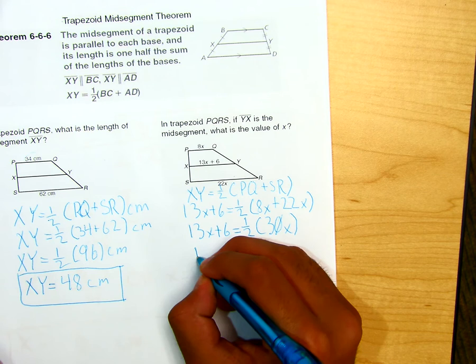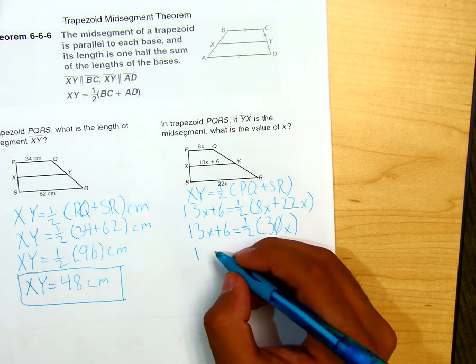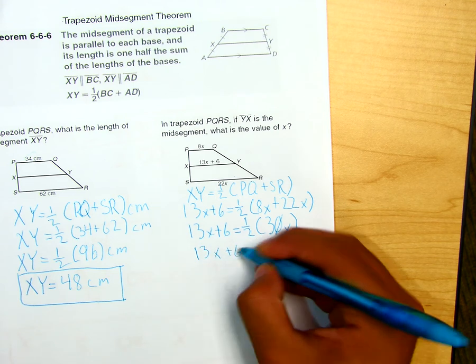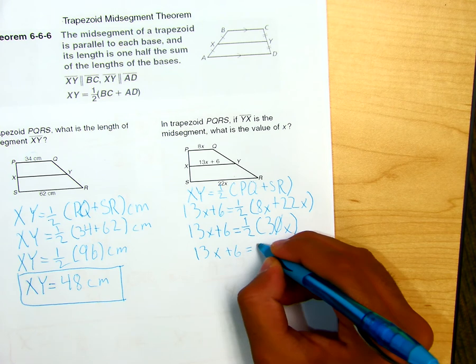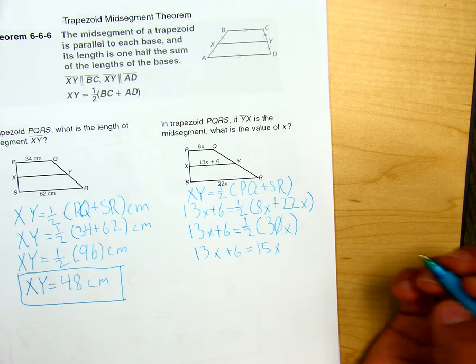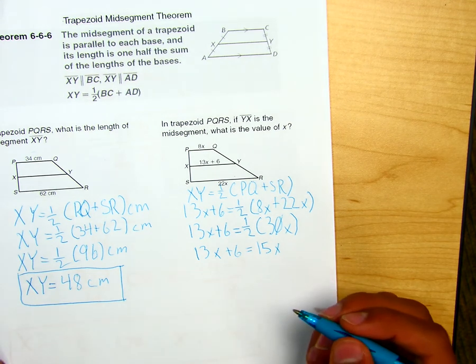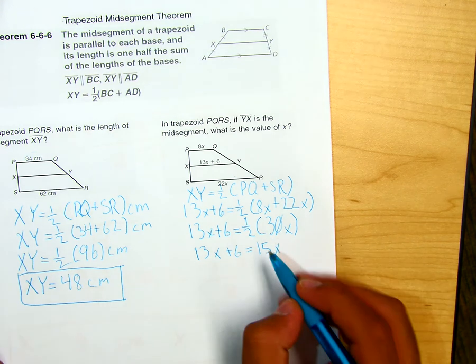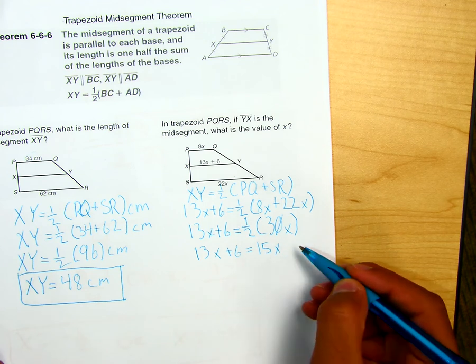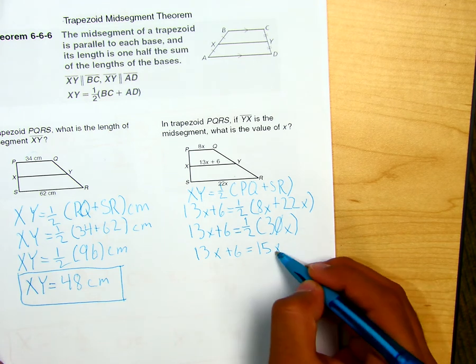Okay, then we'll carry it down to actually solve that for x. So 13x plus 6 equals 15x. Where did 15x come from? When you multiply 1-half by 30, it's the same thing as basically dividing. So you divide 30 by 2, and it would equal 15x.